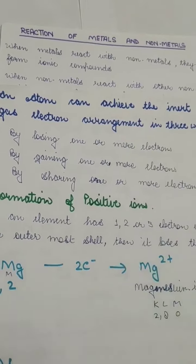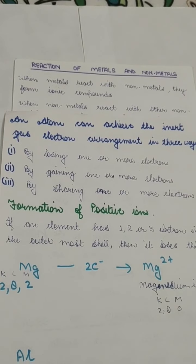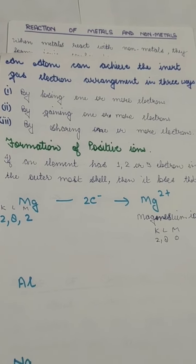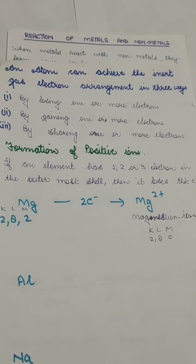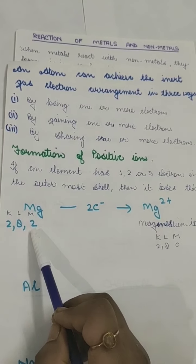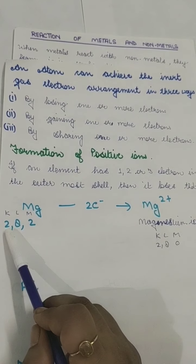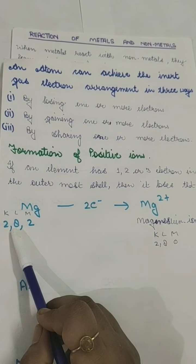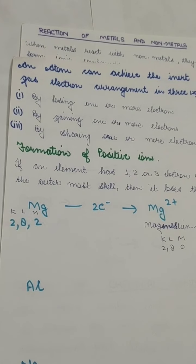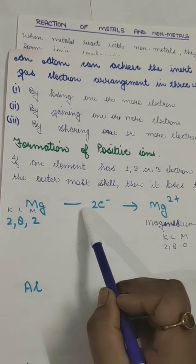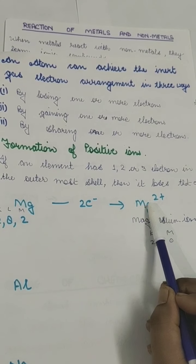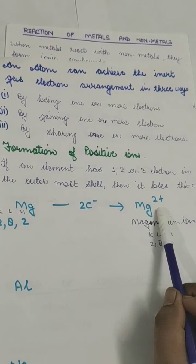Formation of positive ions: if an element has 1, 2 or 3 electrons in the outermost shell, then it loses its electrons. Magnesium, for example, has electronic configuration 2, 8 and 2 in K, L and M shells. It wants to acquire the electronic configuration of neon gas, so it will donate its 2 electrons. It will acquire a positive charge of 2, becoming a cation - magnesium ion (Mg²⁺). The M shell will dissolve and there will be only K and L shells remaining.